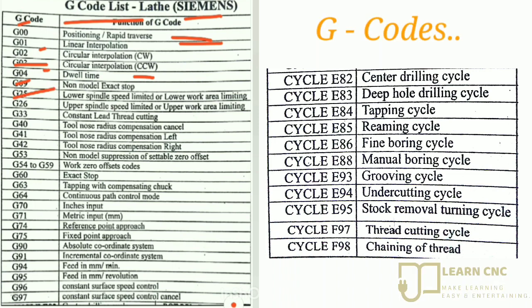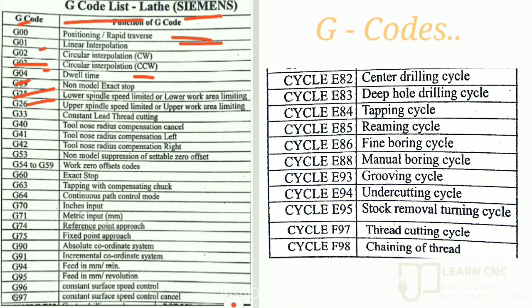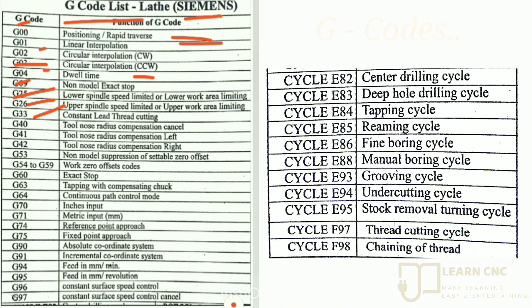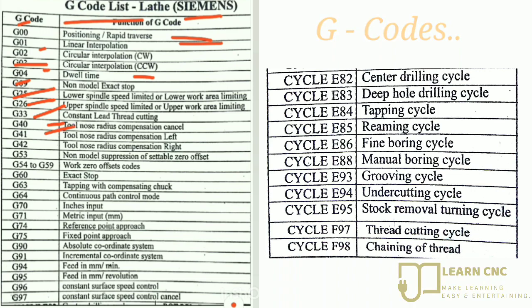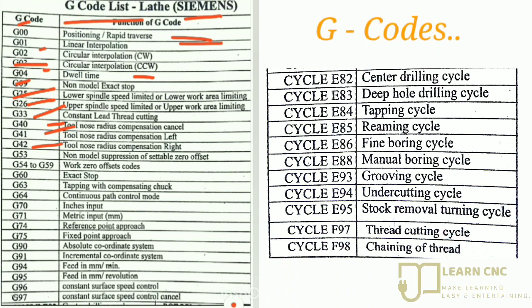G25 means lower spindle speed limit or lower work area limiting. G26 means upper spindle speed limit or upper work area limiting. G33 means constant lead thread cutting. G40 means tool nose radius compensation cancel. G41 means tool nose radius compensation left and G42 means tool nose radius compensation right.